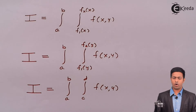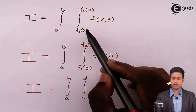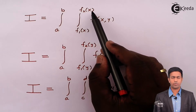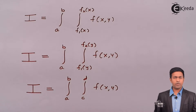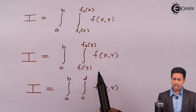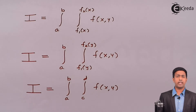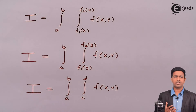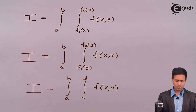Here I have the integration of the function f(x, y) with a double integral. The limits of the first integral are from f1(x) to f2(x) and the second one is from a to b. I've also shown the second and third integrals where the limits are changed but the function remains the same. To understand the order of integration, I'll take one example based on single integration, as that reference will make it very easy to understand.